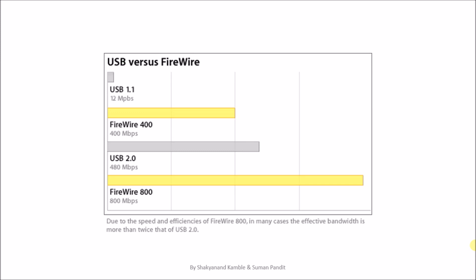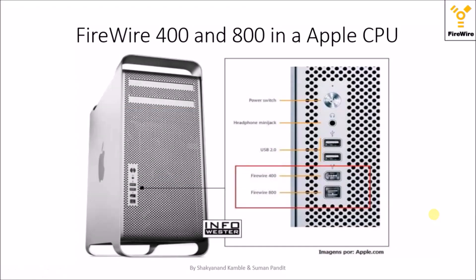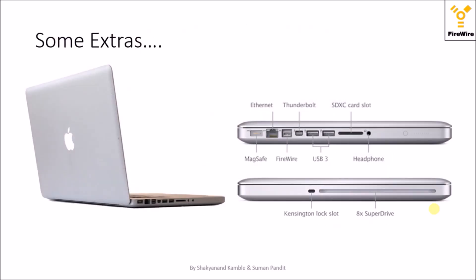Now we will see the graphical representation of USB versus FireWire. We can see that FireWire 400 exceeds the USB 1.1 version in terms of speed, and FireWire 800 exceeds the USB 2.0 version in terms of data transfer speed. We can also see the positioning of FireWire 400 and 800 ports in an Apple CPU. There are various types of FireWire connectors: 4-pin, 6-pin, and 9-pin connectors. These are some extra ports found in Mac systems.